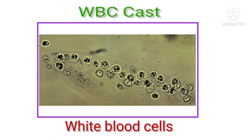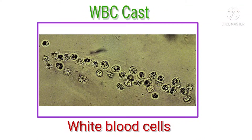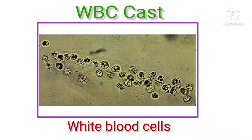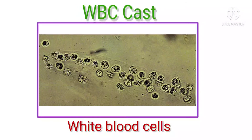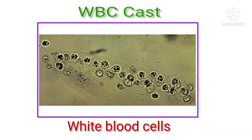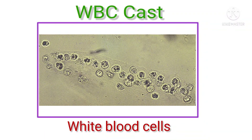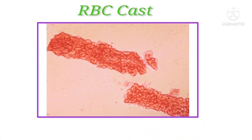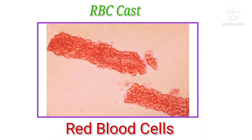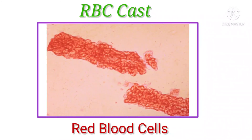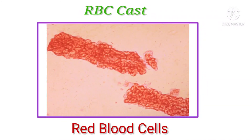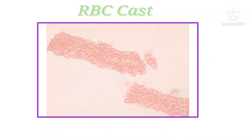White blood cell casts are common with acute kidney infections and interstitial nephritis. Red blood cells may stick together and form red blood cell casts.